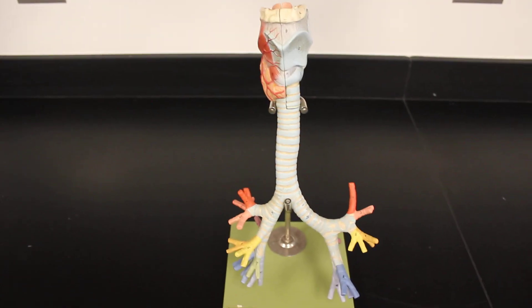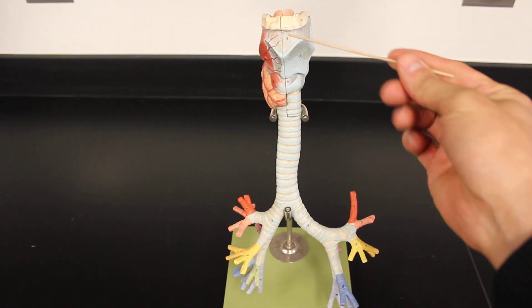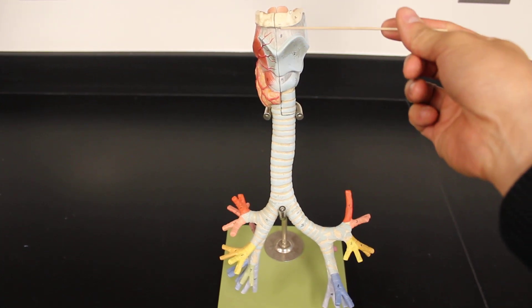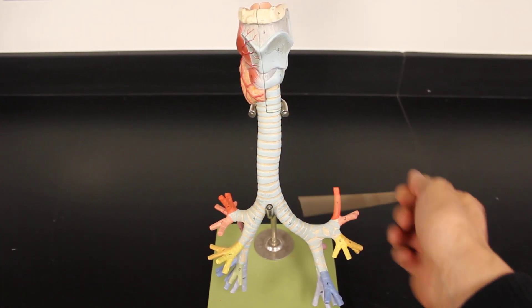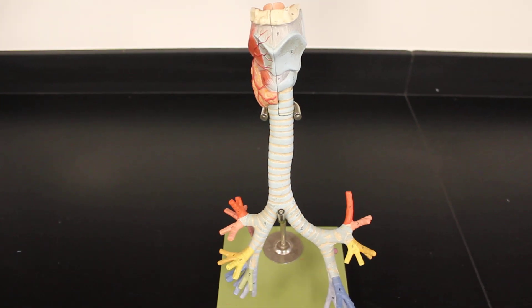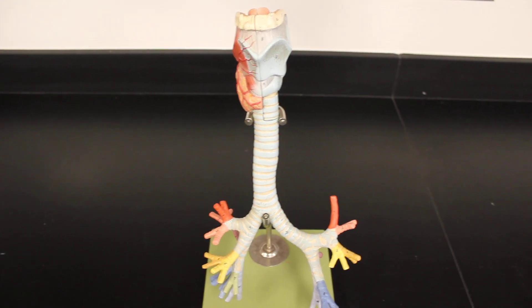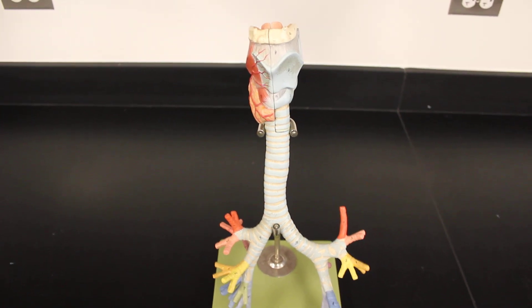As we take a look at the bronchial tree we actually begin here at the larynx. Notice how this model has the top part, the larynx, up to the part of the cricoid cartilage and then it becomes the trachea and the bronchial tree. So let's walk through how air will move through these structures and then take a closer look at them as we can explore them.